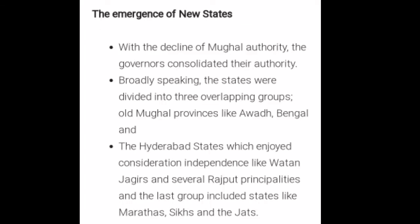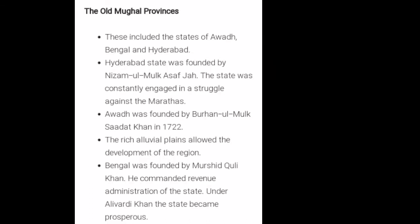Point two: the emergence of new states. With the decline of Mughal authority, the governors consolidated their authority. Broadly speaking, the states were divided into three overlapping groups: first, the old Mughal provinces like Awad, Bengal, and Hyderabad; second, states that enjoyed considerable independence like Vatan Jagirs and several Rajput principalities; and third, states like the Marathas, Sikhs, and Jats.